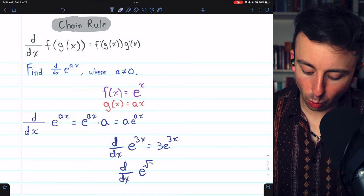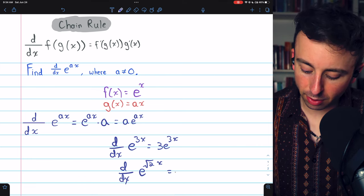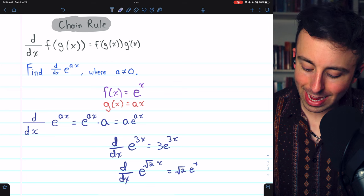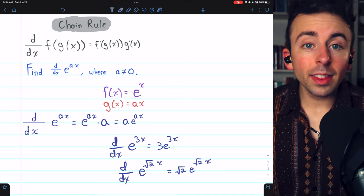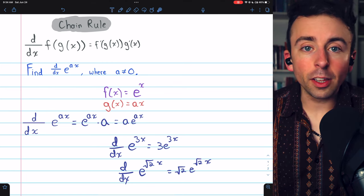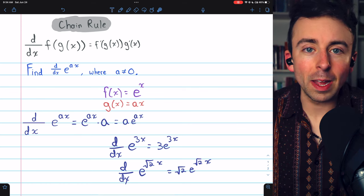The derivative of e to the square root of 2x is just square root of 2 multiplied by e to the root 2x. That's how you take the derivative of e to the power of a real number times x.